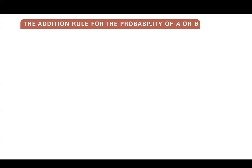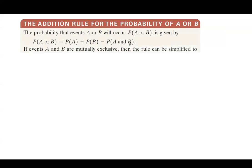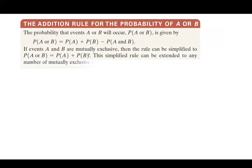Let's introduce the addition rule for the probability of events A and B. The probability that events A or B happen — P(A union B) — is given by: P(A) + P(B) − P(A and B). If events A and B are mutually exclusive, the intersection probability equals 0, so it simplifies to P(A) + P(B). This simplified rule can be extended to any number of mutually exclusive events. For example, you roll a die...